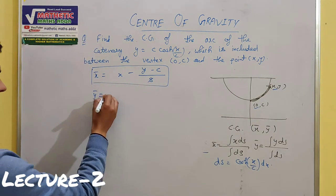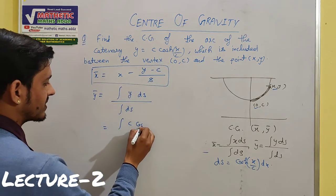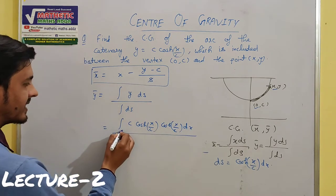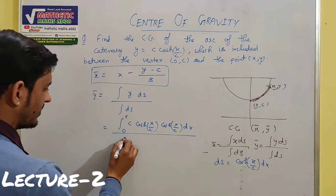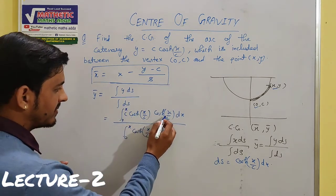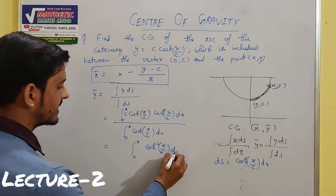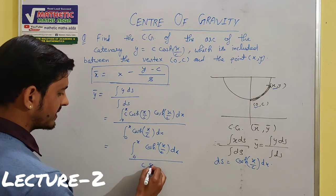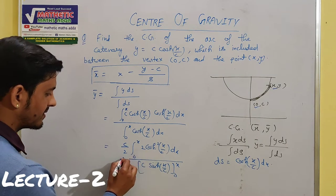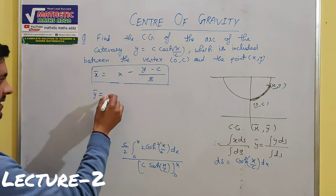Now we find ȳ. The formula is ȳ = ∫y·ds / ∫ds. Here y = c·cosh(x/c) and ds = cosh(x/c)·dx. So the numerator becomes ∫₀ˣ c·cosh²(x/c)·dx. We use the identity cosh²θ = (1 + cosh2θ)/2 by multiplying and dividing by 2 — this is a formula you studied in previous trigonometry/hyperbolic classes. So we get (c/2)·∫₀ˣ [1 + cosh(2x/c)]·dx.